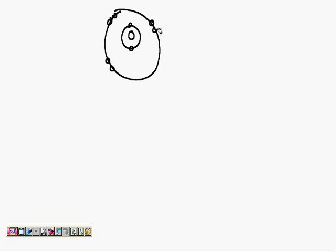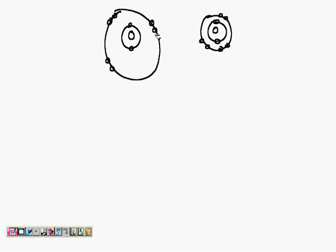2 electrons will be shared from the first oxygen atom. The second oxygen atom also has 2 electrons in the first orbit and 6 electrons in the second orbit. These 2 electrons and those 2 electrons will be shared between the two atoms.